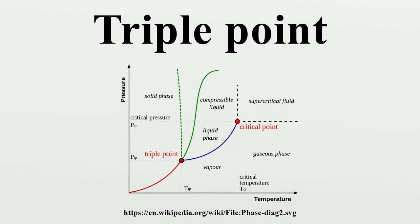Triple point cells are used in the calibration of thermometers. For exacting work, triple point cells are typically filled with a highly pure chemical substance such as hydrogen, argon, mercury, or water.